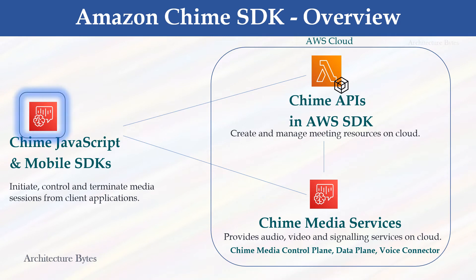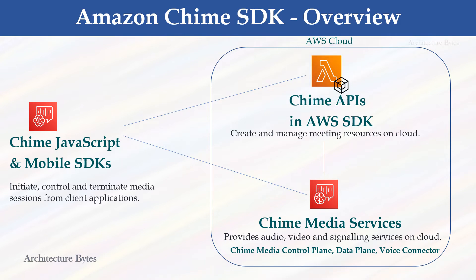Amazon Chime SDK is made up of the following. First, Chime JavaScript and Mobile SDKs, which are used to initiate, control, and terminate media sessions from client applications. Second, Chime APIs in AWS SDK, which are used to create and manage meeting resources on the cloud — for example, from a Lambda function. Third, Chime Media Services, which provides audio, video, and signaling services on the cloud. Client applications connect to them to conduct meetings. It consists of services like Chime Media Control Plane, Data Plane, and Voice Connector.